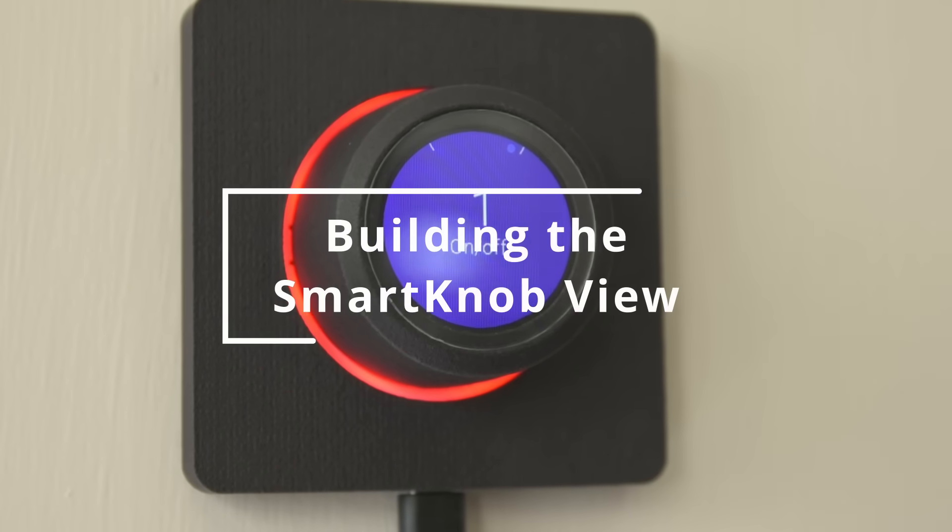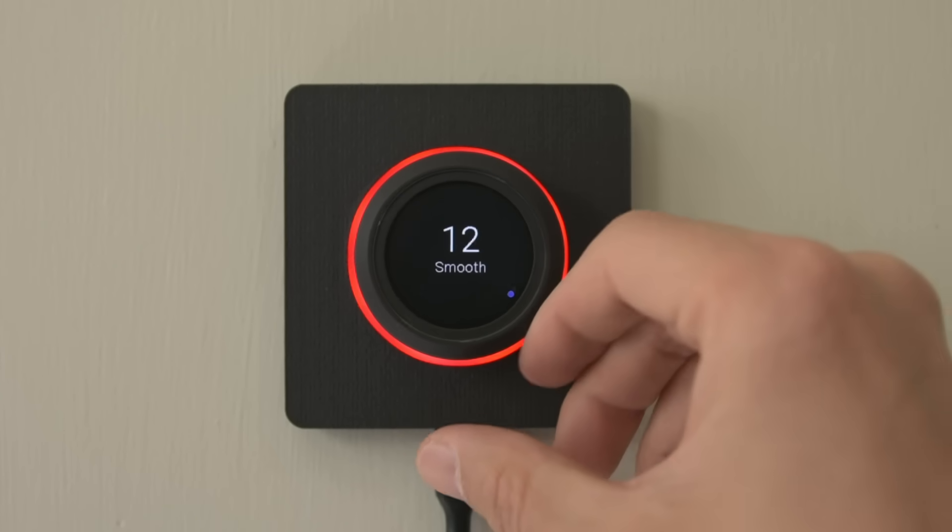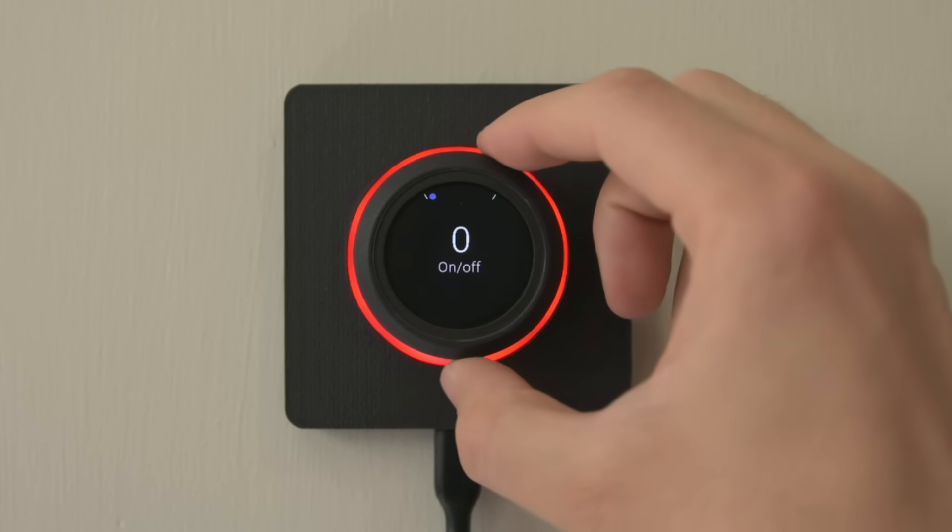Let's take a closer look at how the SmartNob view works and I'll show you how I built it. If you didn't see my previous video, the SmartNob is an input device that can spin smoothly or provide software-defined detents and endstops using an internal brushless motor.